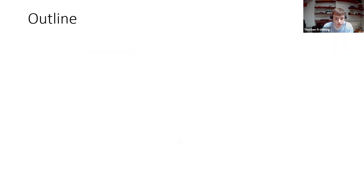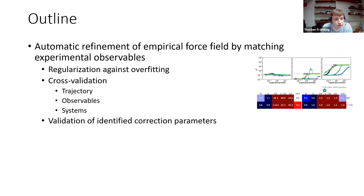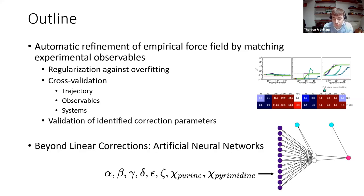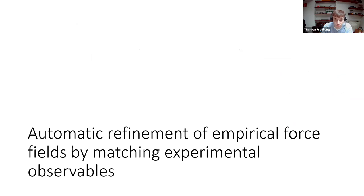Let me give you a quick outline. First I would like to start with the details of the first project in which we are refining existing correction functions in an automatic way by fitting simulations to experimental data. This hopefully touches on the most relevant steps when applying such protocols like regularization, cross-validation, and final validation. Then I have some slides giving the outlook for a closely related project on using artificial neural networks within the correction function.